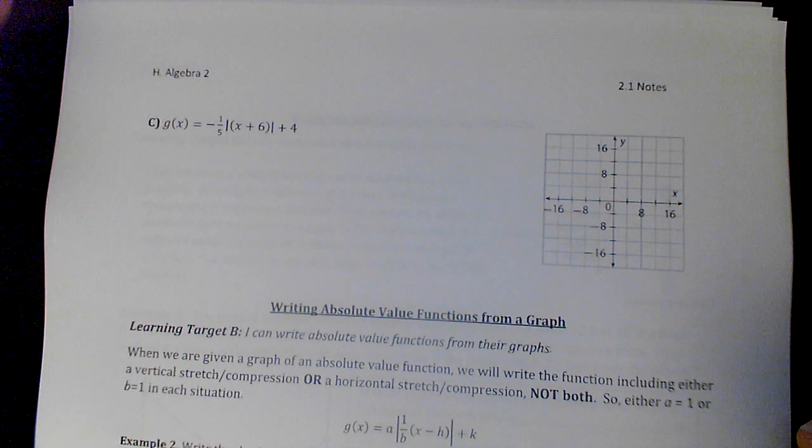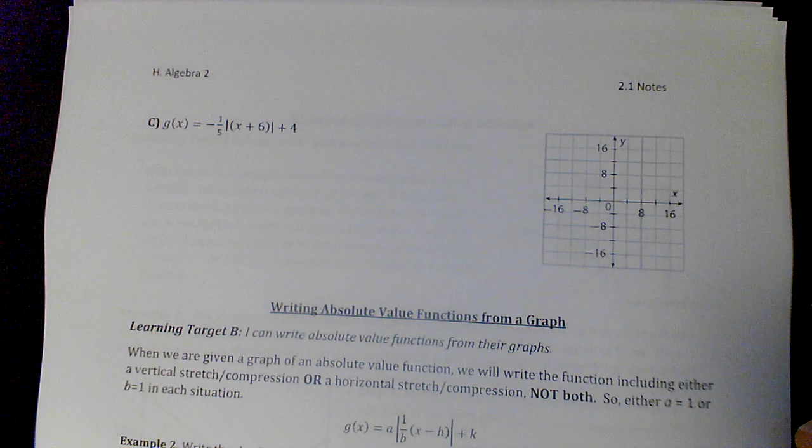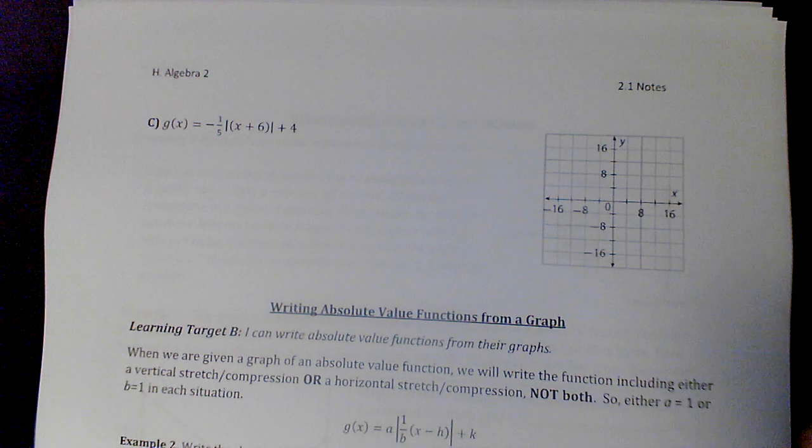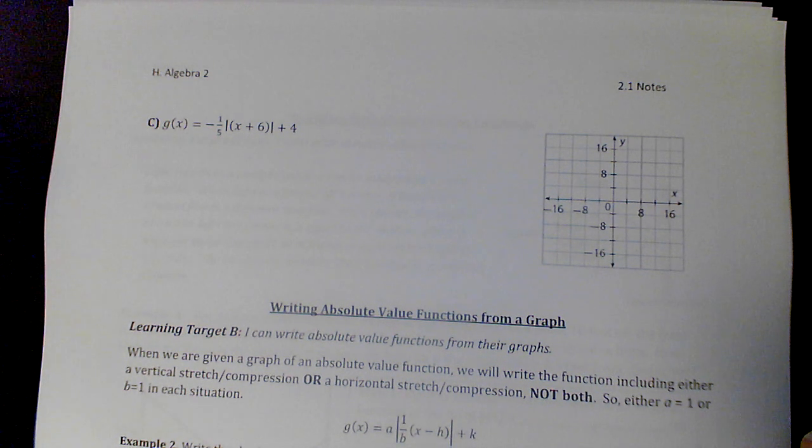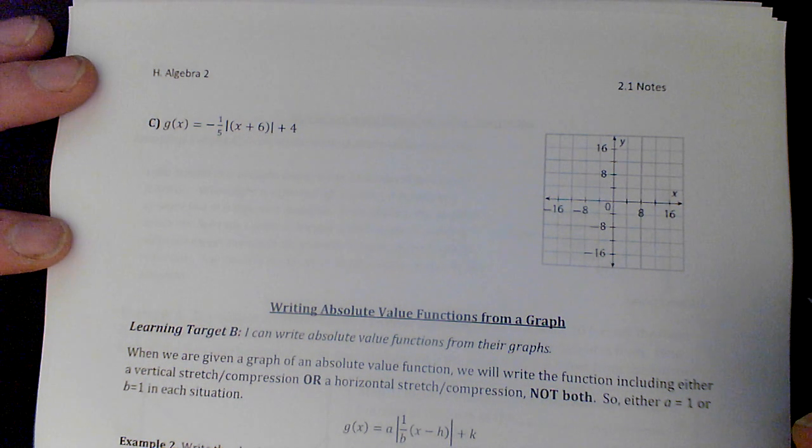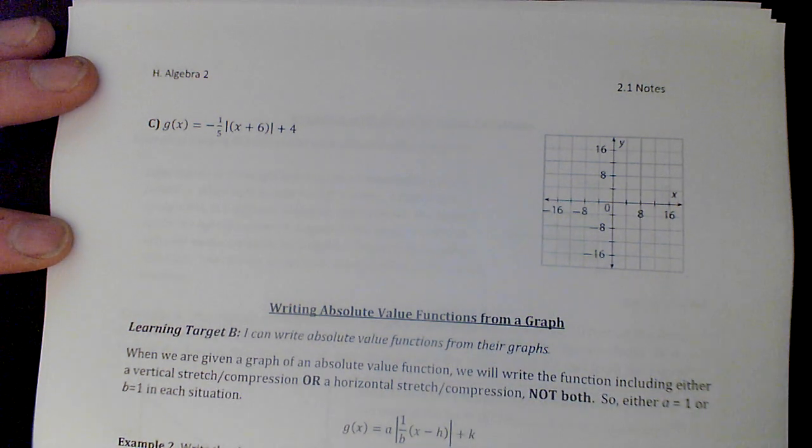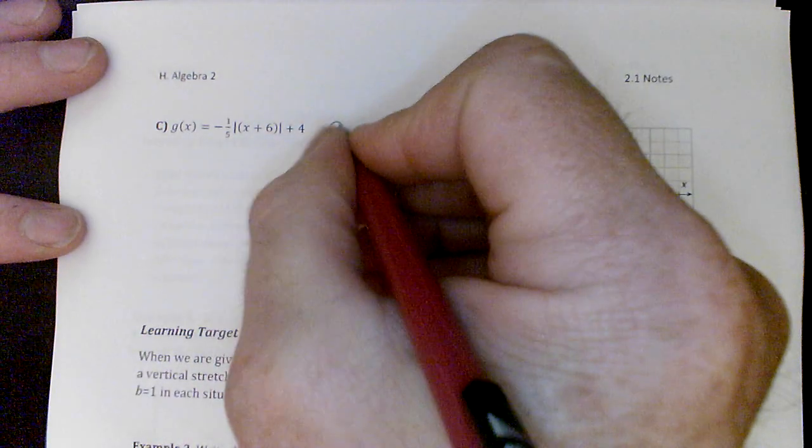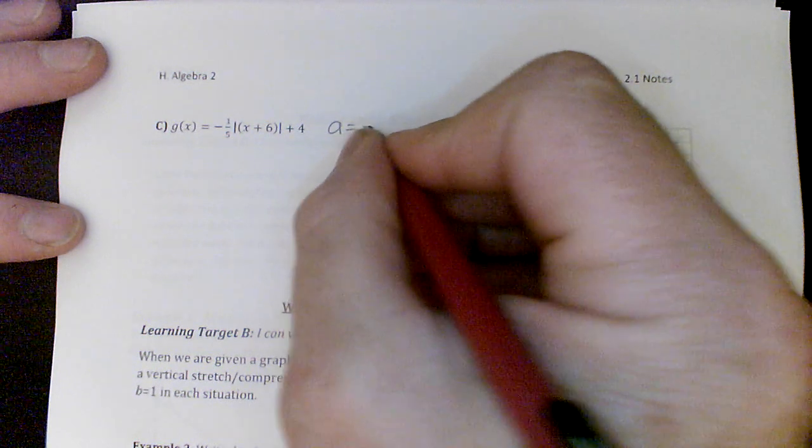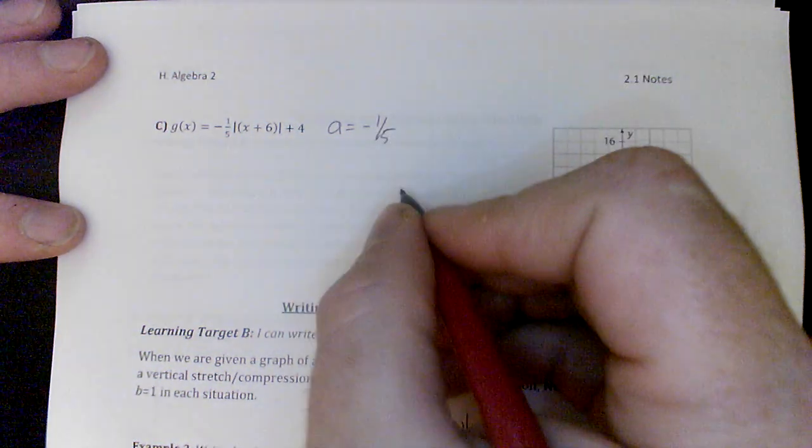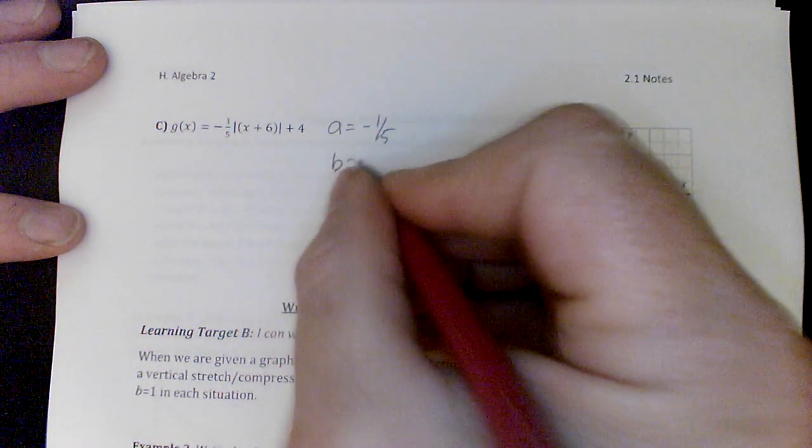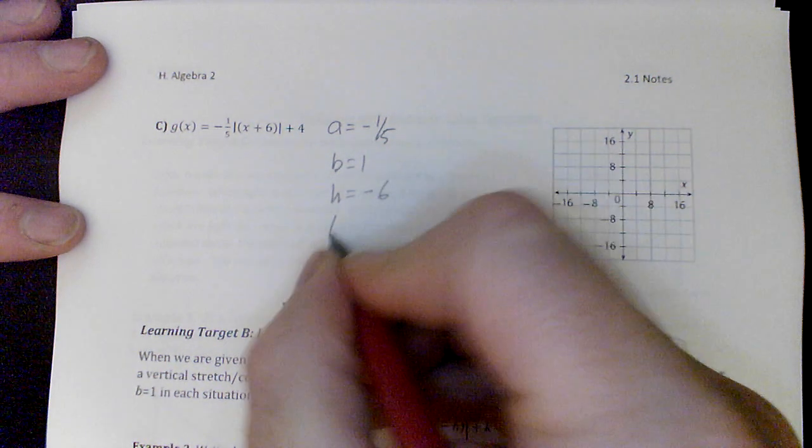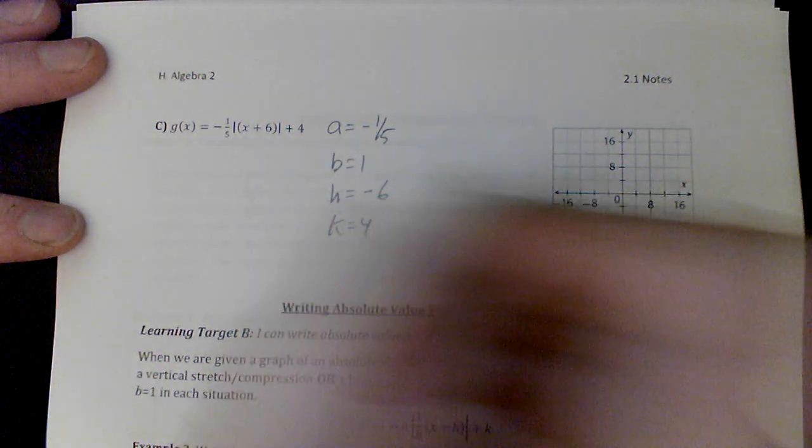All right. Other than reflections, a and b, a vertical stretch with an absolute value is the same as a horizontal stretch. So they don't really need both of them. I'm going to use both of them, but they don't really need them. All right. So we've got a equals negative 1 fifth. This is an important one. We'll say b equals 1, h equals negative 6, k equals 4. I am going to go through all the steps again.